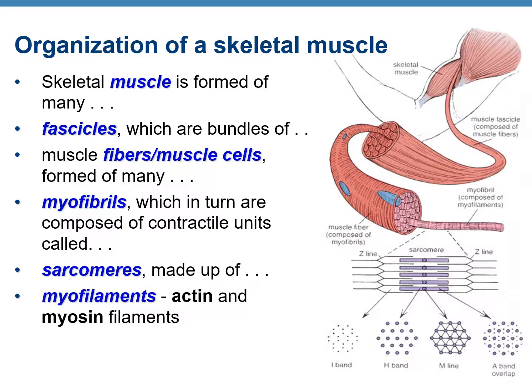Skeletal muscle has different levels of organization. One skeletal muscle is formed of many bundles called fascicles. Each fascicle is made up of several muscle cells or muscle fibers. One muscle fiber contains specialized organelles called myofibrils, which are like thin threads. The myofibrils are made up of contractile units called sarcomeres, and the sarcomeres in turn are made up of very thin thread-like structures known as myofilaments — primarily the actin and myosin filaments.